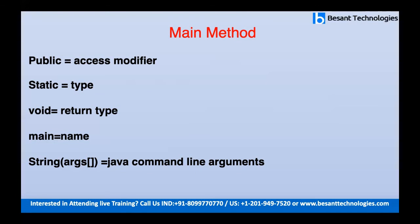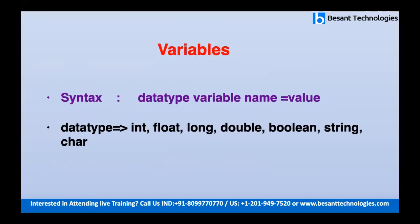Void is the return type of the main method — it means the method will not return anything, but whatever code you have given inside the method will run. Main is the name of the method, and String args holds the command line arguments.